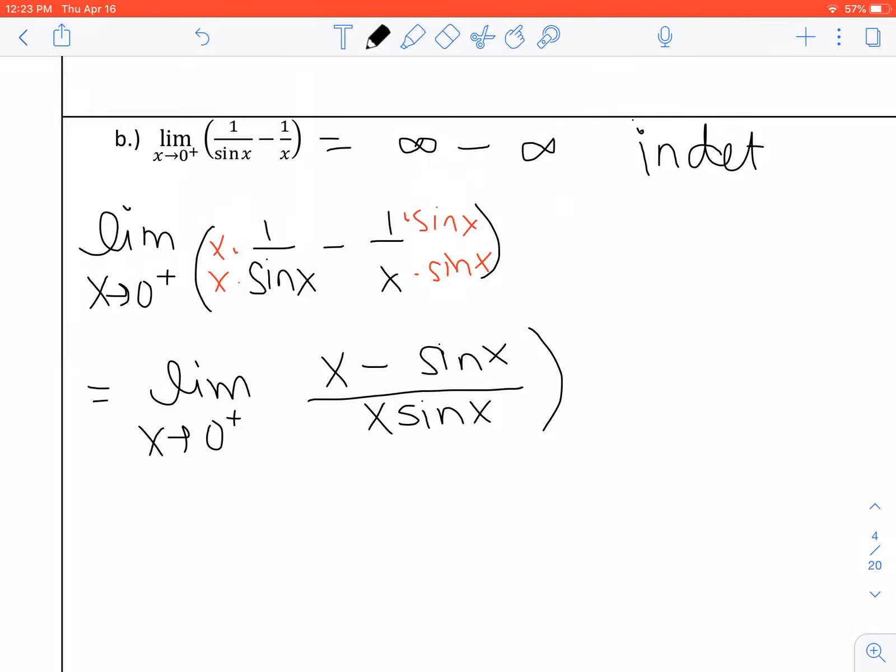And so I'm going to use direct substitution again. And if I do that and I evaluate this at 0 approaching on the right, I get 0 minus sine of 0 is 0, so that's going to be 0 over 0 times 0, which is 0. So now I can use L'Hopital's. And this is indeterminate. I should put that down also. So this is indeterminate, just like the ones that we saw previously. So I'm going to now use L'Hopital's rule.